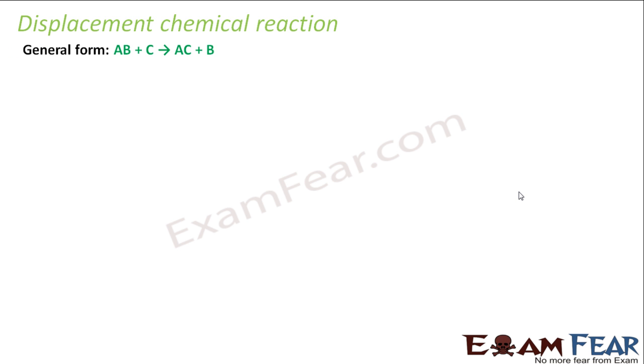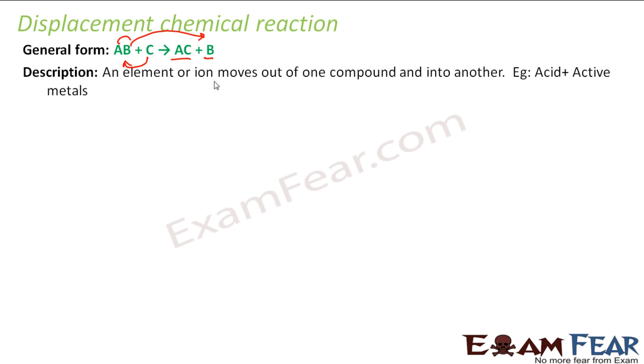So let's see the chemical, let's see the chemistry definition of this displacement chemical reaction. You have this product AB when C comes, C displaces this guy B so it becomes AC and the B is out. So it says that one element or ion moves out of one compound and into another. One example is active acid plus active metals, you get this kind of reaction.